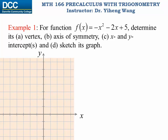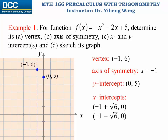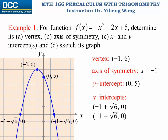Now let's sketch the graph. We know the vertex is at (−1, 6), the axis of symmetry is the vertical line x = −1, the y-intercept is at (0, 5), and the x-intercepts are at (−1 ± √6, 0). We also know the leading coefficient is negative, so the graph is reflected vertically and has a downward cup shape. With all this information we can sketch the graph. Notice that for this downward-opening parabola, the vertex value of 6 is the maximum function value.